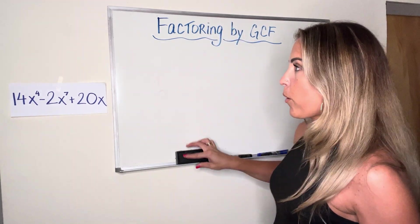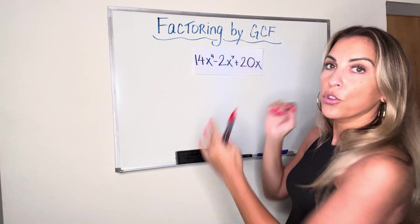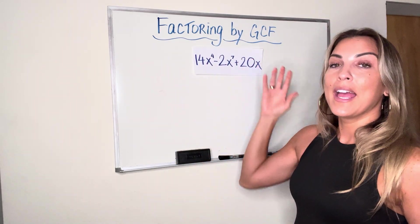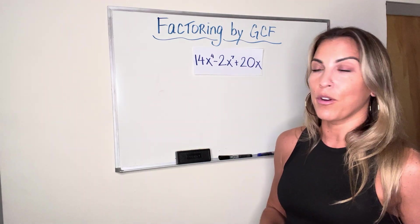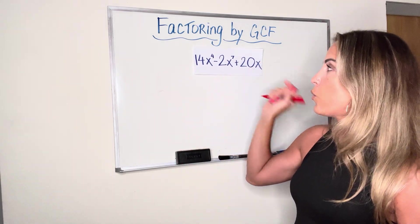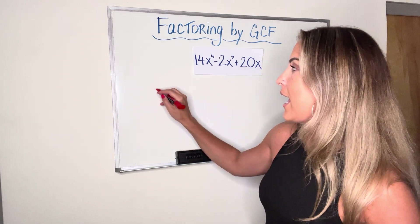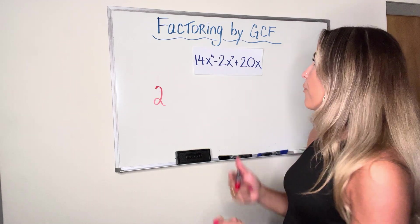We're going to do one more example where we get three terms in here to make it a little more complicated. And when you're dealing with three terms, you have to make sure that every single term contains that factor, that greatest common factor. Again, the word common. So let's look at the numbers first. We have 14, a negative 2, and a 20. What is the greatest number that can go into all three of those? That is 2.